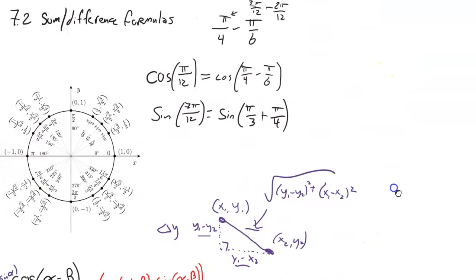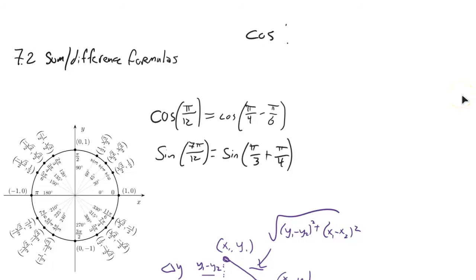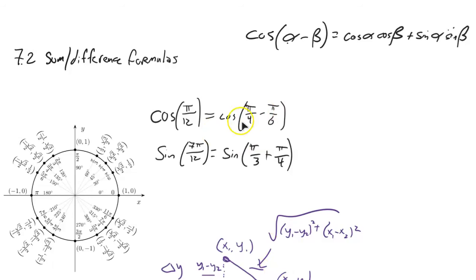Going back to the original example: to find cosine of pi over 12, I break it into pi over 4 minus pi over 6. Think of pi over 4 as alpha and pi over 6 as beta. Using the difference formula, I can rewrite this as cosine of pi over 4 times cosine of pi over 6 plus sine of pi over 4 times sine of pi over 6.